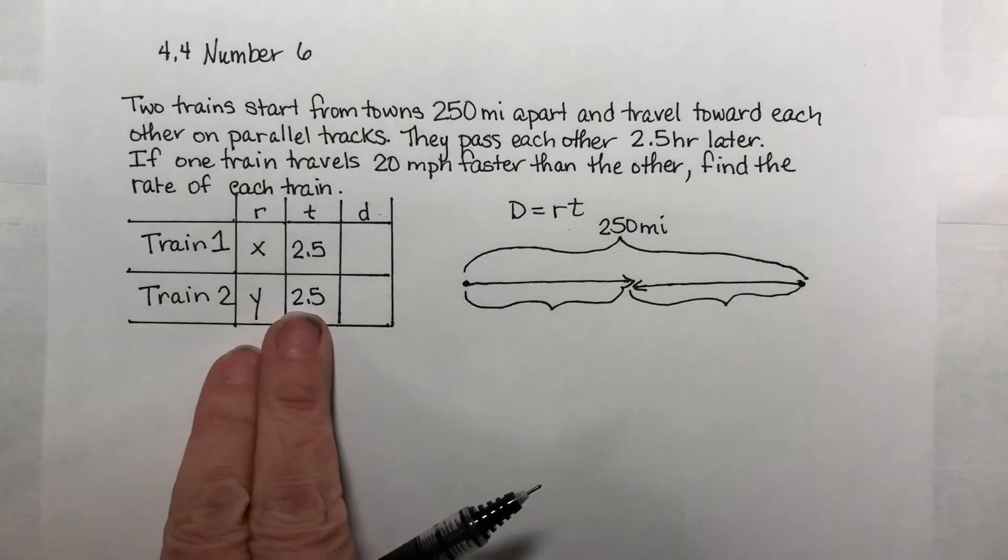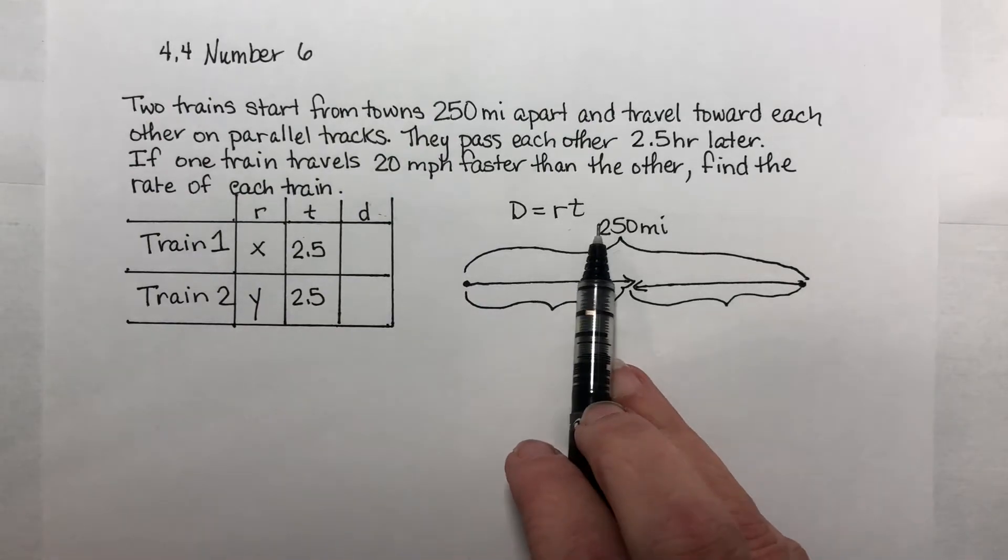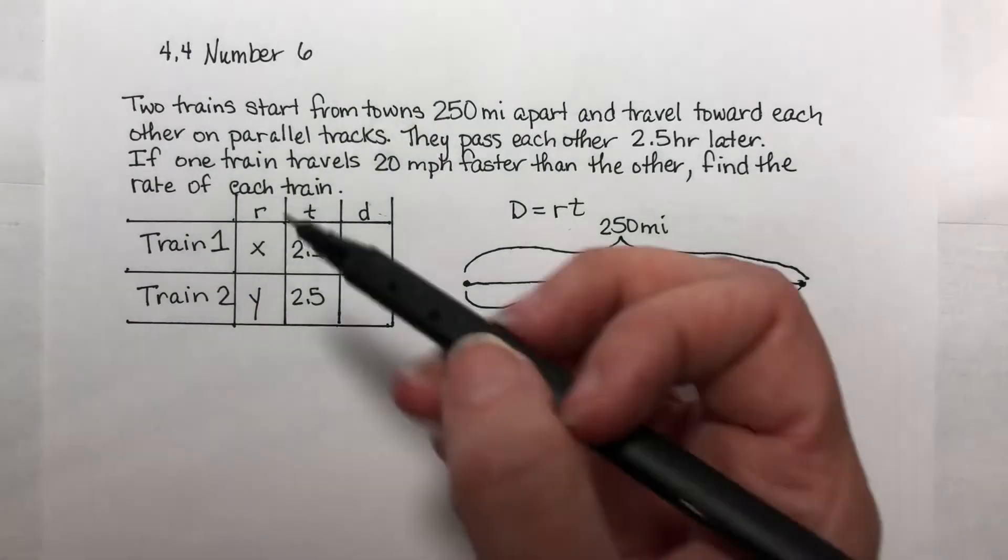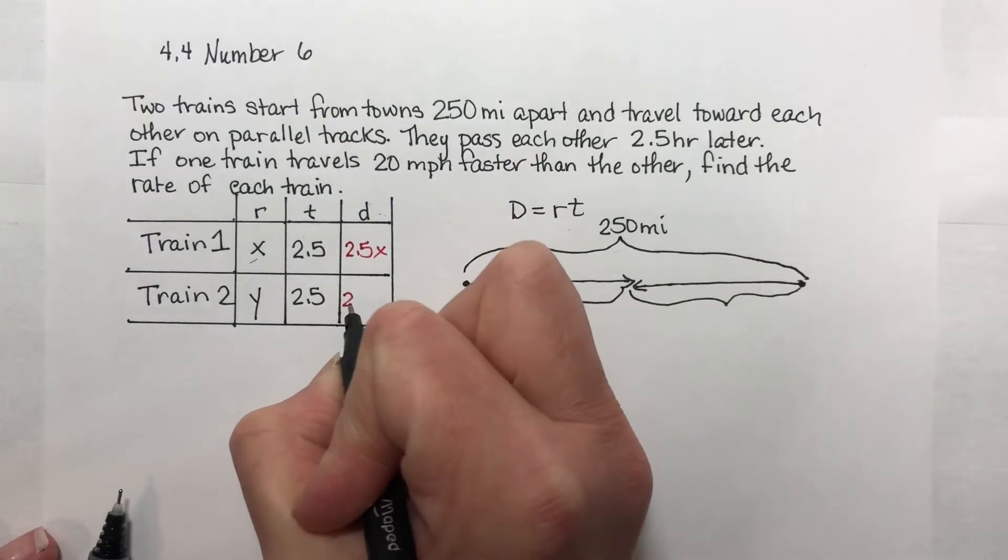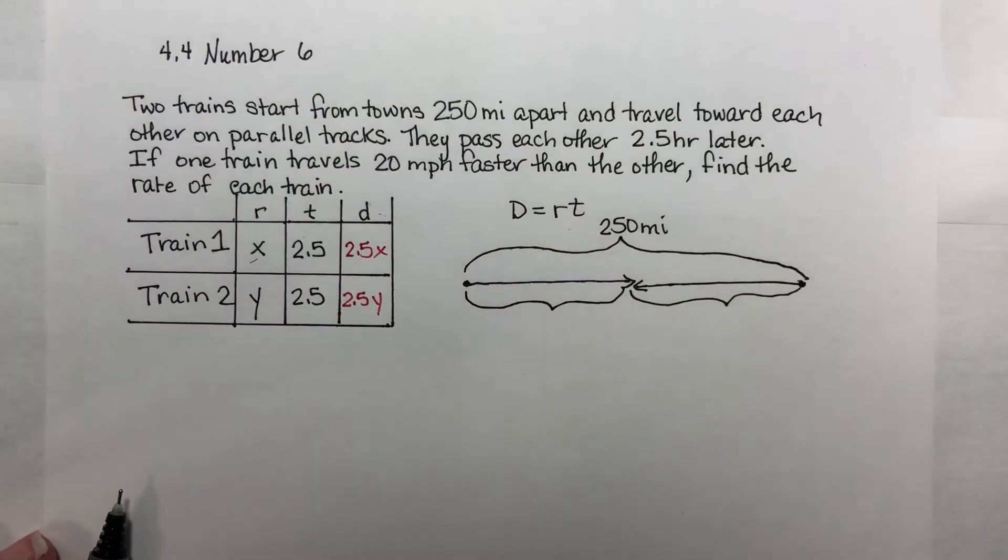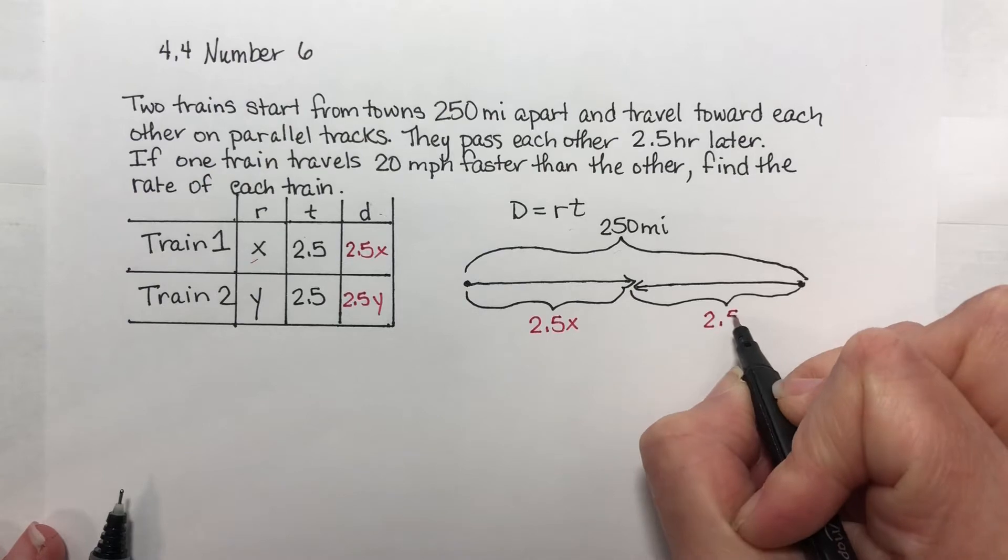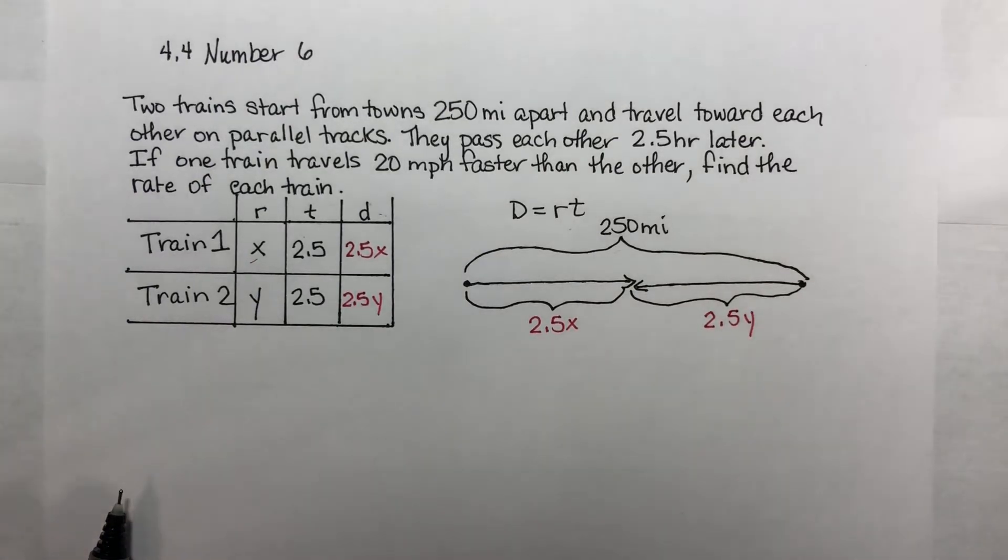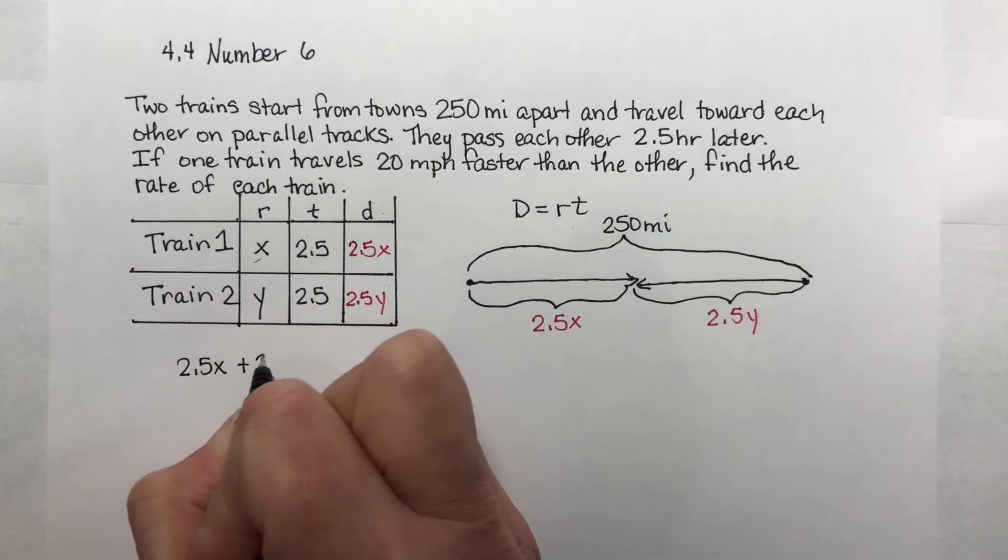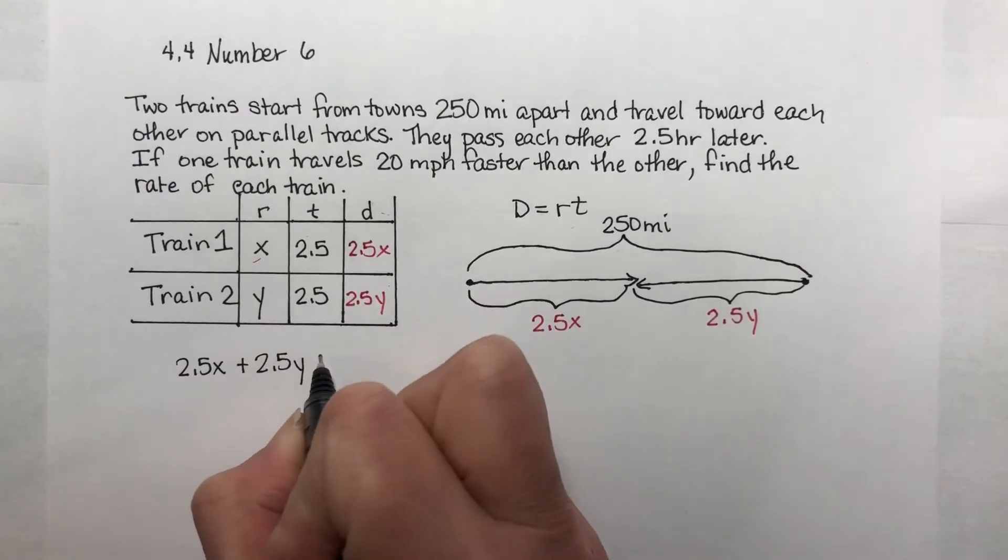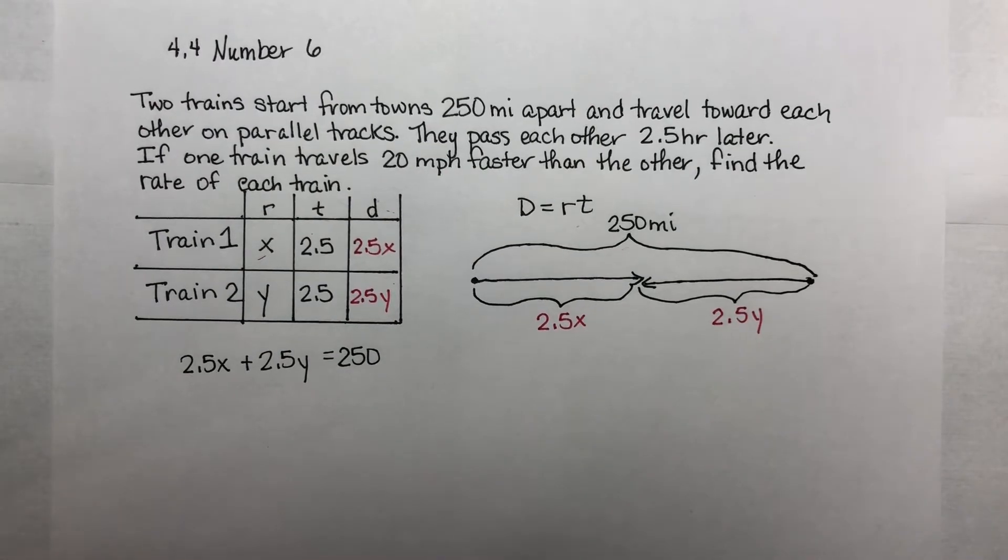Okay, now this is enough information for us to find out how far they've gone. I take the distance is equal to rate times the time. So this total distance traveled right here, rate times time, that's going to be 2.5x and this one is 2.5y. So this distance is 2.5x, this distance is 2.5y. Okay, so my first equation, I should add these two together and it should equal 250 miles apart. So that's one equation, we need two.